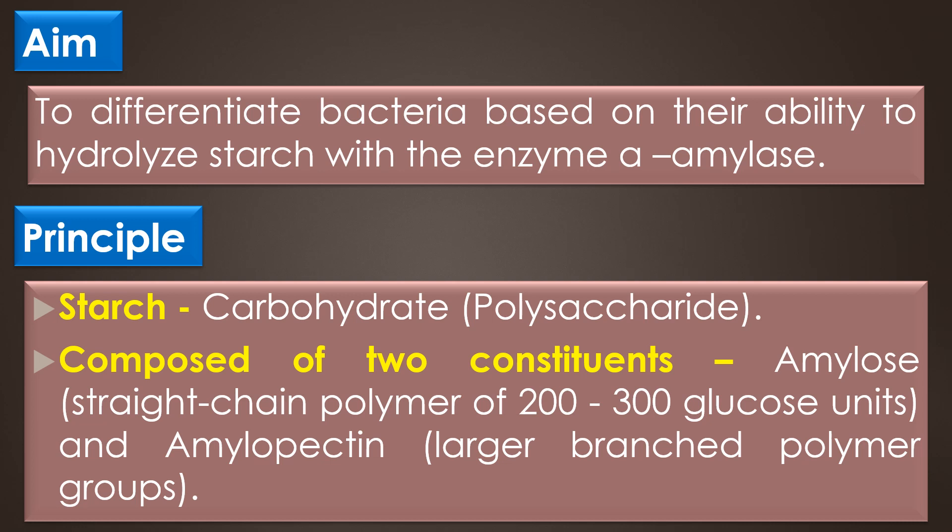The two forms differ in that amylopectin contains a polysaccharide side chain connected to approximately every 30th glucose in the main chain. These side chains are identical to the main chain except that the number one carbon of the first glucose in the side chain is bonded to carbon number six of the main chain glucose. The bond is therefore a 1,6 alpha glycosidic linkage. Starch is too large to pass through the bacterial cell membrane.